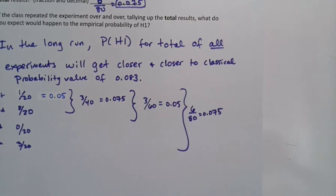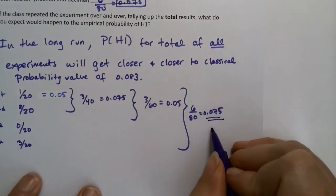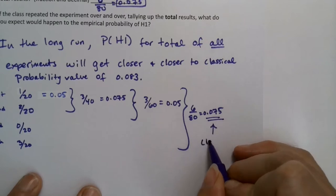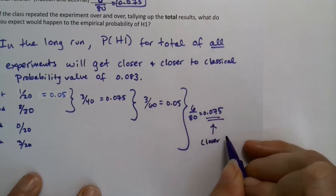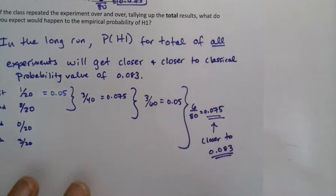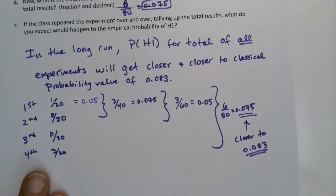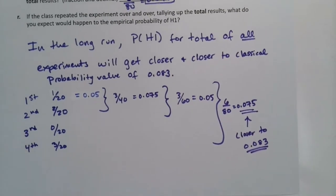And we keep going like that. It won't hop back and forth between all these numbers — that would be silly. What's going to happen is that in the long run, the average is going to work out closer and closer. The more trials we do, the closer it's going to get to 0.083.